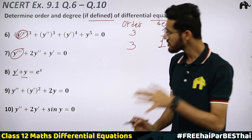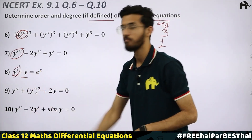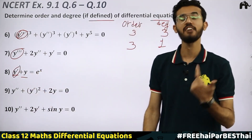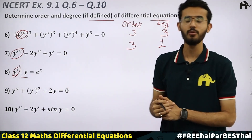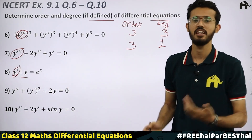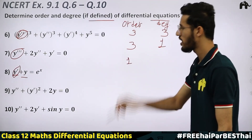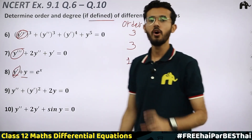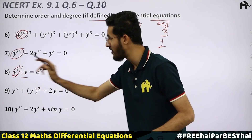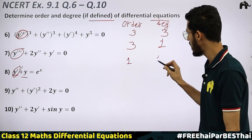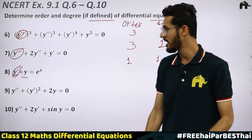Question 8: y′ + y = eˣ. Here y′ means dy/dx — that is the first order derivative and also the highest. So the order is 1. Its power is 1, so the degree is also 1.